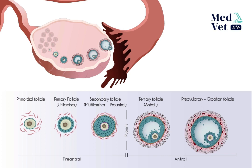After ovulation, the remaining granulosa and theca cells that made up the follicle before it ruptured remain in the ovary. These mix and give rise to a transitory structure initially called the hemorrhagic body, because a blood clot forms from the rupture of blood vessels in the theca. These cells then transform into luteal cells, which make up the corpus luteum, or yellow body — initially an early corpus luteum that becomes a mature corpus luteum. This performs important endocrine functions related to the preparation of the uterus for a future pregnancy. If fertilization does not occur, the corpus luteum degenerates and becomes the corpus albicans, made up of fibrous scar tissue.